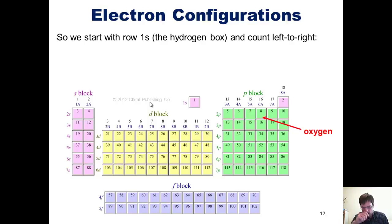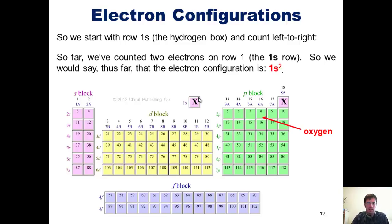We start with row 1s and box 1 in that row, which corresponds to hydrogen. Then we count left to right, 1, 2. So far, we've counted two electrons on row 1, the 1s row. So the electron configuration we've counted up so far, just to box 2, which is the helium box, is 1s2. This number 2 comes from there being two boxes filled. This 1s tells us which row we are in the s-block.